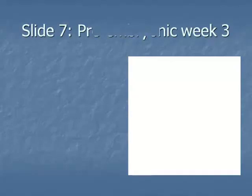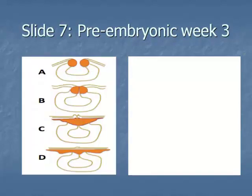Slide 7, the embryonic period. Item 1: the third week is marked by the formation of the trilaminar embryonic disc via the process of gastrulation.